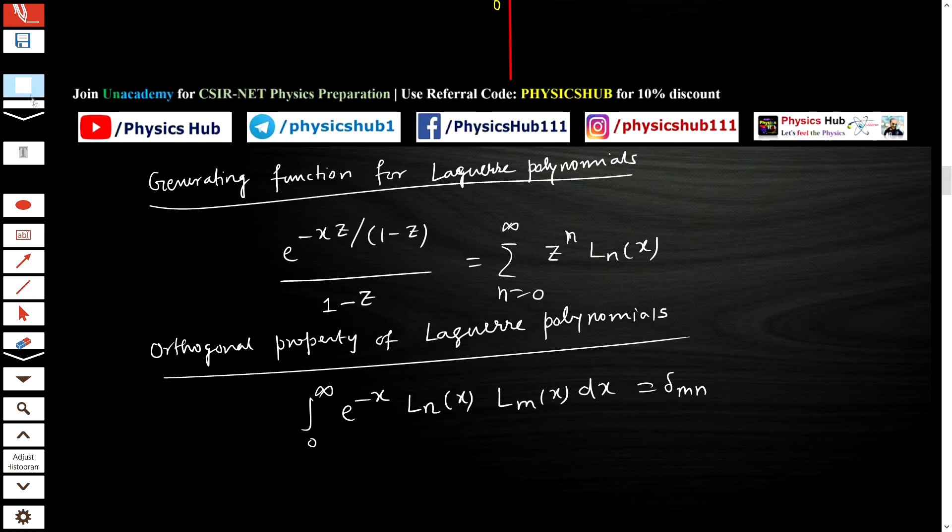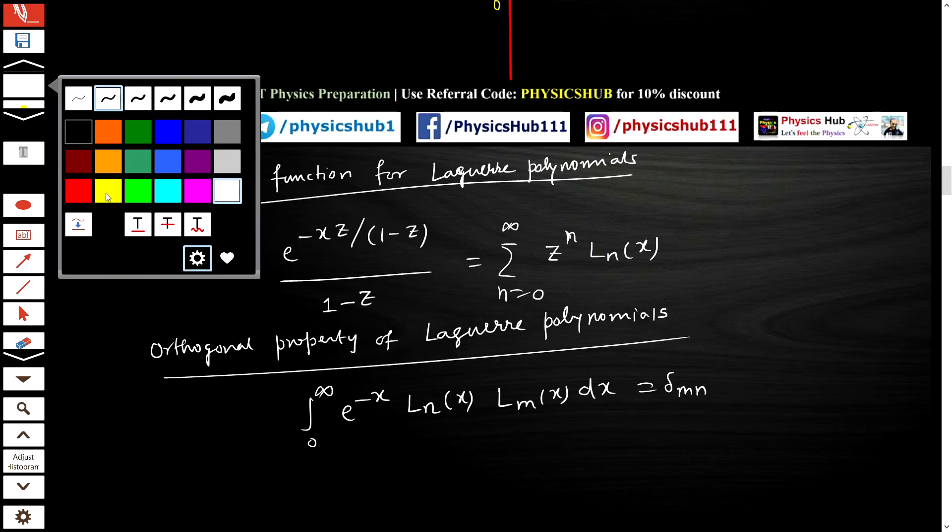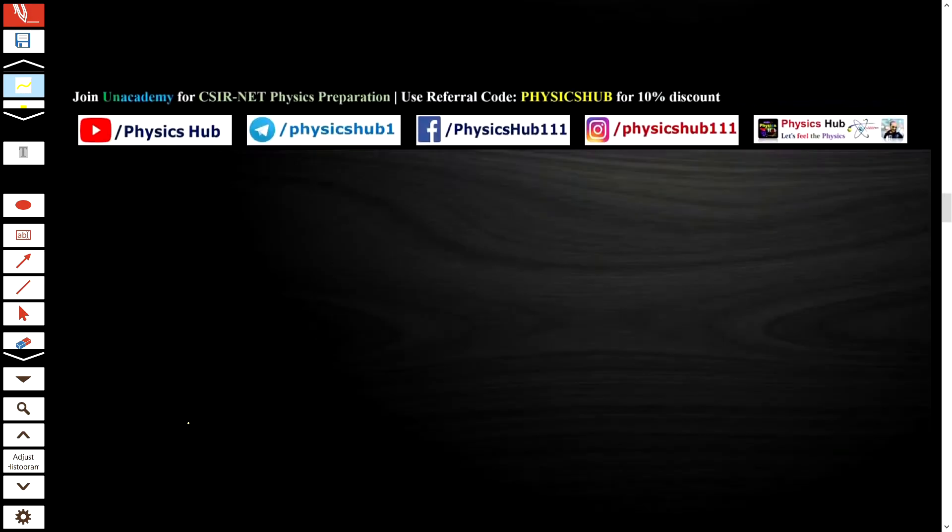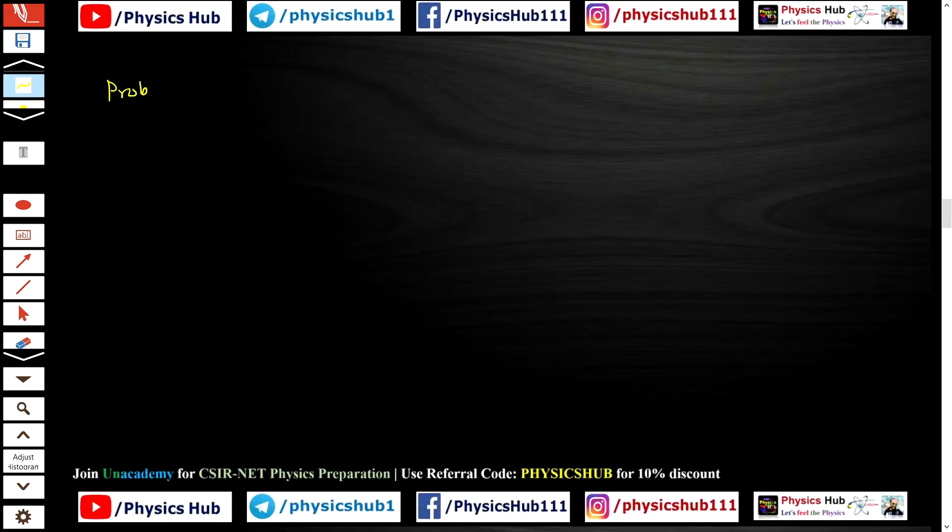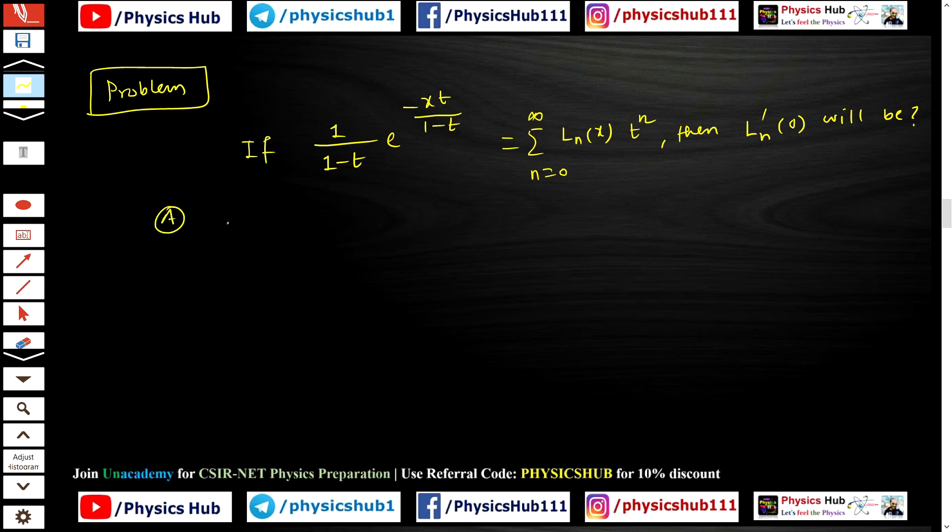Let me give you one problem as homework. You can try this problem at home and comment your answer in the comment section. The problem is: If (1/(1-t)) * e^(-xt/(1-t)) = Σ(n=0 to ∞) Ln(x)t^n, then Ln'(0) will be? I am giving you 4 options: 0, 1, n, and -n. Try to do this at home and comment down your answer. I will give you the solution in the next video. Till then, bye bye, take care.